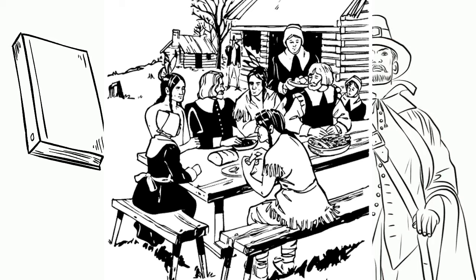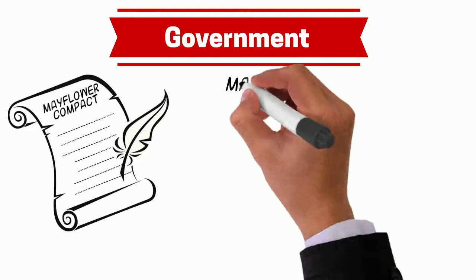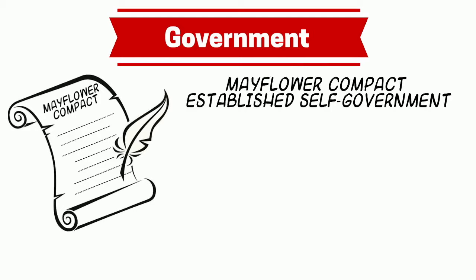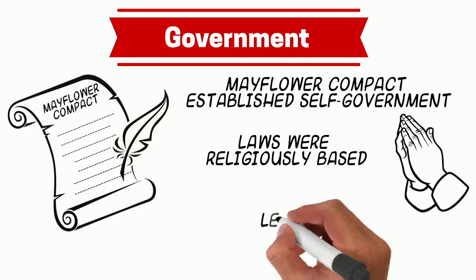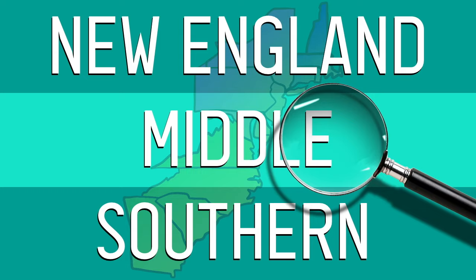New England's government was an interesting one because when they arrived in the New World, there was no government. They had to establish self-government by signing the Mayflower Compact and making an agreement with one another. This took a lot of discipline. As you can imagine, the laws and rules of a society full of Puritans and Separatists were very religiously based, and all elected officials in this region had to attend church.